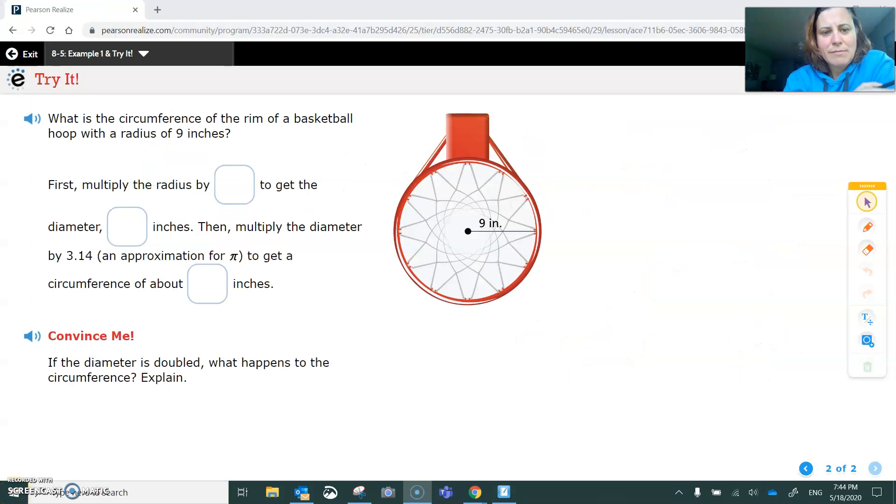When you have a problem like this, if you want to know the circumference of this basketball hoop, the first thing that you have to do is you have to take the diameter, which is 9 inches, and you have to double it. So multiply the radius by 2 to get the diameter, which is 18 inches.